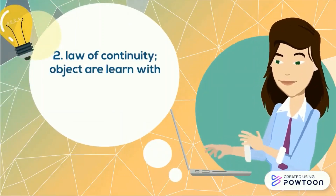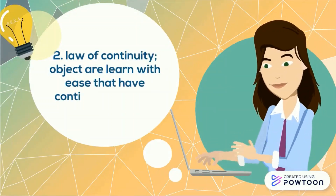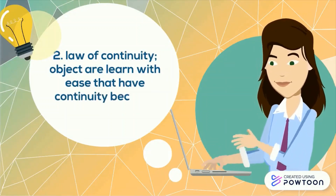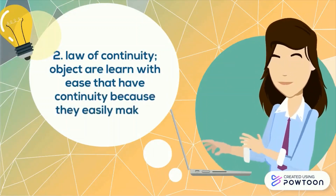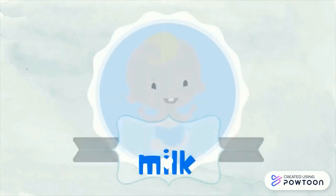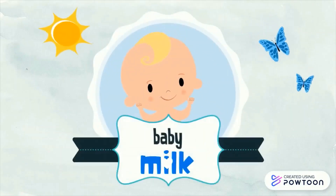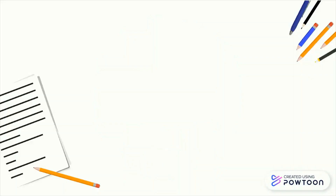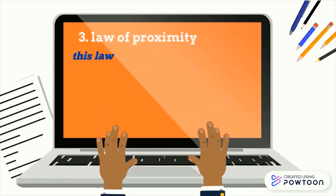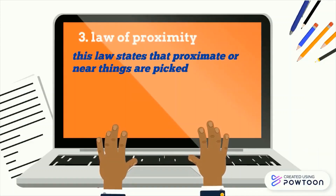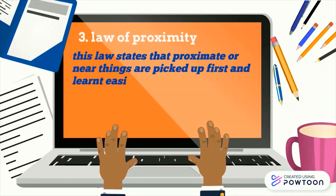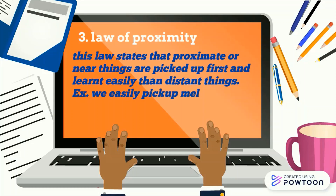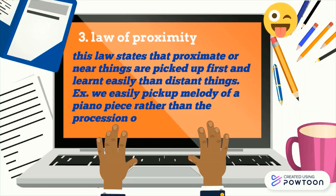The second law is the law of continuity. According to this law, objects are learned with things that have continuity because they easily make a whole. For example, when I say baby you easily think of milk, or when I say ink you easily think of pen. Coming to the third, the law of proximity states that proximate or near things are picked up first and learned more easily than distant things. For example, we easily pick up the melody of a piano piece rather than the position of single notes.